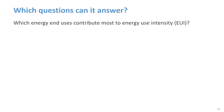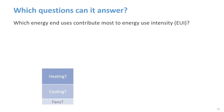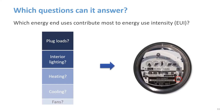Which energy end uses contribute the most to energy use intensity? A simple box model can estimate how much energy is consumed for each end use, like fans, cooling, heating, interior lighting, or plug loads. This information can be really useful on projects with energy performance goals, helping to focus attention on the systems responsible for the most energy consumption.